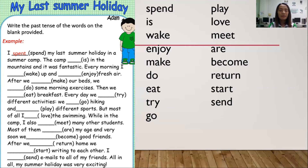One more example: 'The camp blank in the mountains, and it was fantastic.' The word inside the bracket is 'is,' and the past tense of 'is' is 'was.' Now let's read the sentence again: 'The camp was in the mountains, and it was fantastic.'